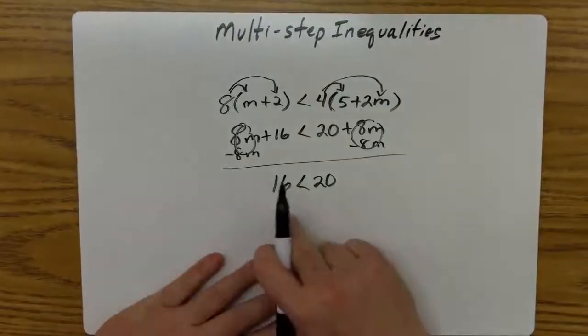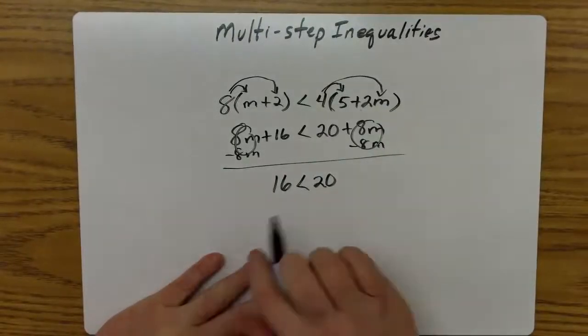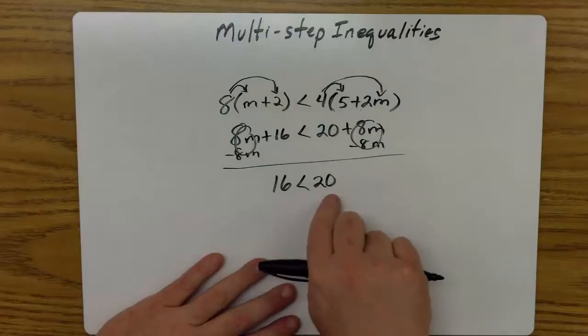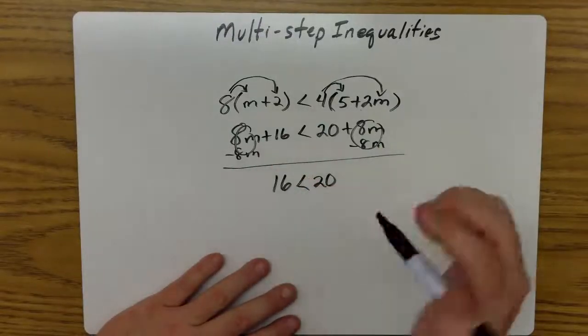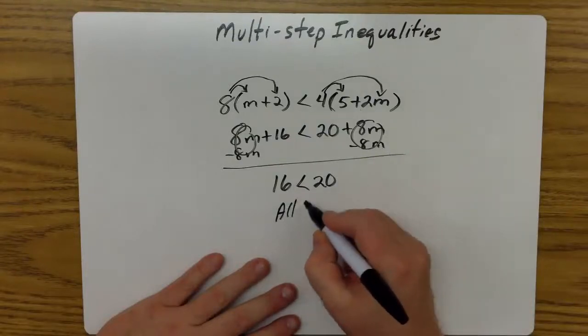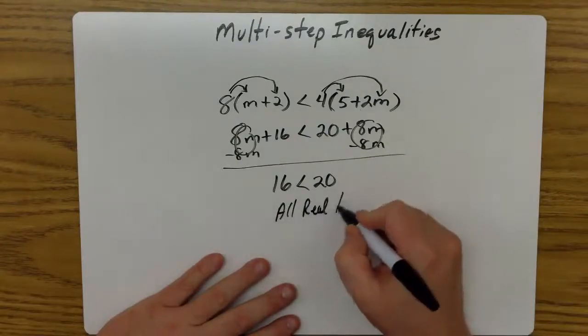So the solution here is to ask ourselves, is that true or false? That is true. 16 is less than 20, which means any value we put in for m will work. So the official answer is to say all real numbers.